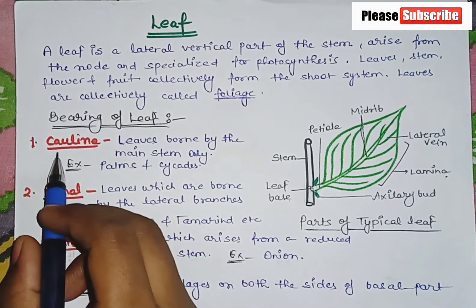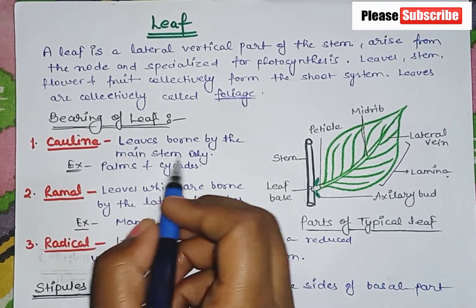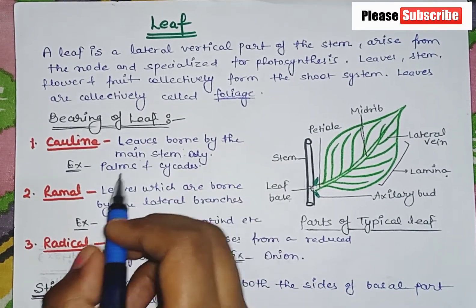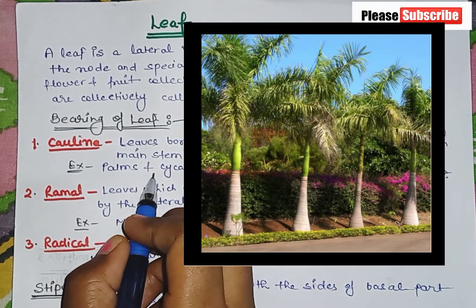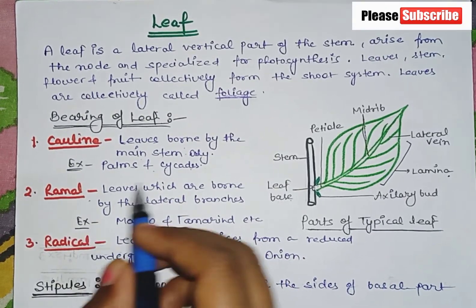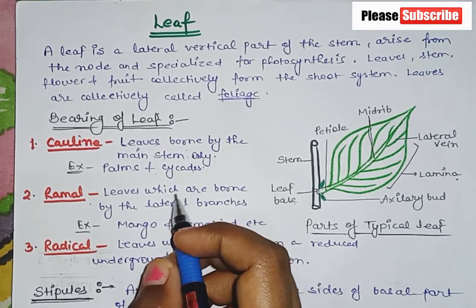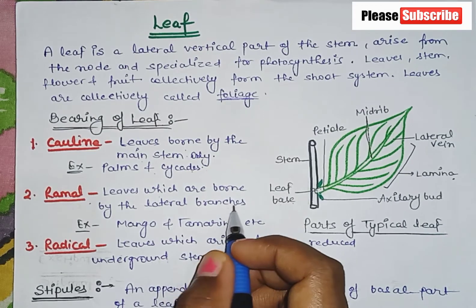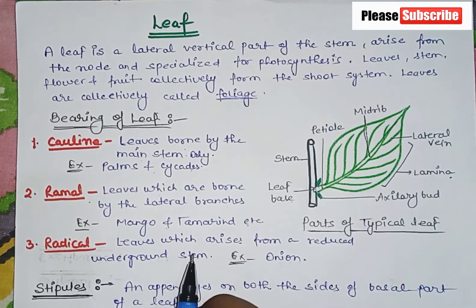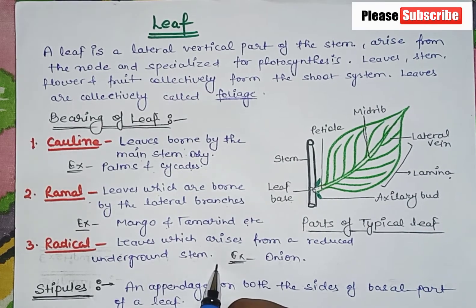Now we will see the bearing of the leaf. The first is cauline, where leaves are borne by the main stem — for example, palm. The second is ramal, where leaves are borne by the lateral branches — for example, mango and tamarind. The third is radical, where leaves arise from a reduced underground stem.